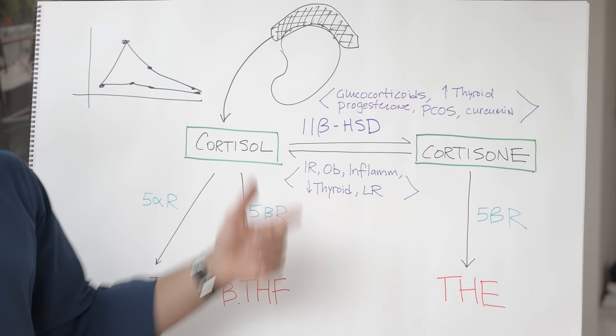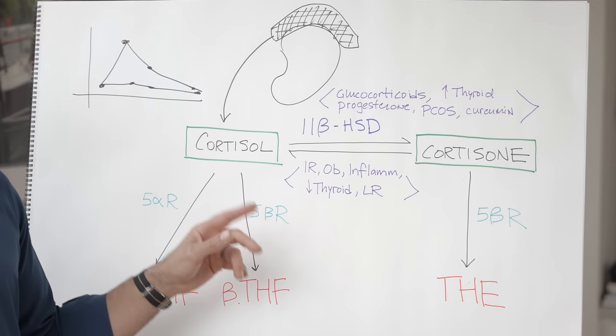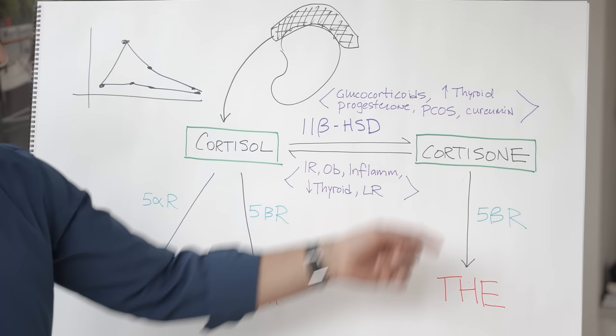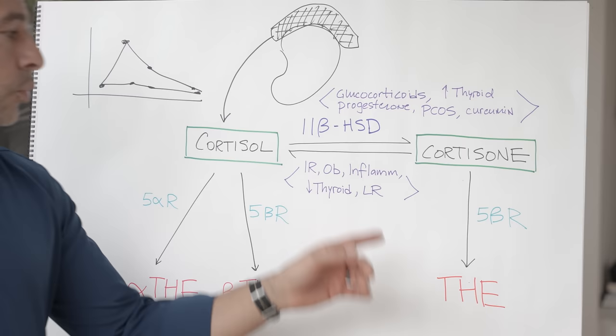The other direction, cortisol being turned into cortisone, is facilitated when you have glucocorticoids. So, for example, if a patient is taking steroids, understandably the body says, we don't need any more cortisol, let's turn it into cortisone. Hyperthyroidism, progesterone, PCOS, and even supplements like curcumin.